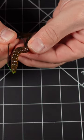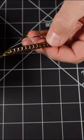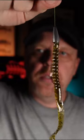Now measure the worm and poke the hook back into the body of the worm. And there you go. There's your basic Texas rig.